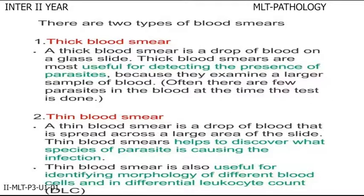There are two types of blood smears. One is thick blood smear. A thick blood smear is a drop of blood on a glass slide. Thick blood smears are most useful for detecting the presence of parasites because they examine a large sample of blood. Often, there are few parasites in the blood at the time the test is done.